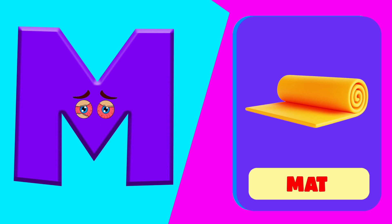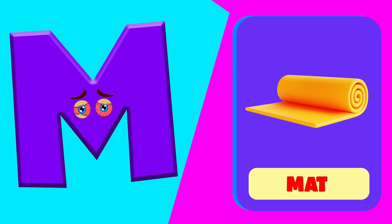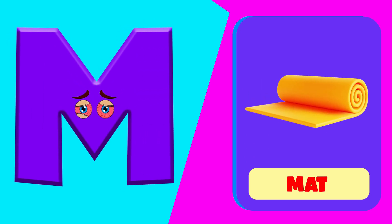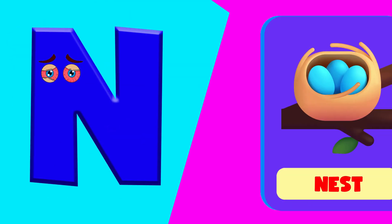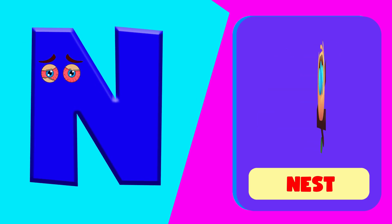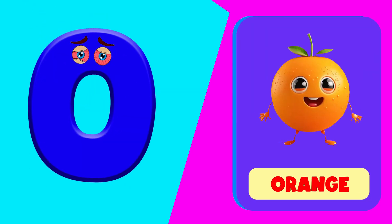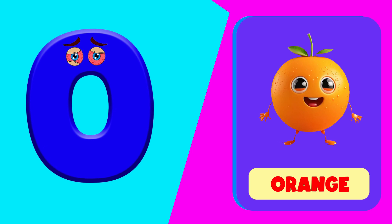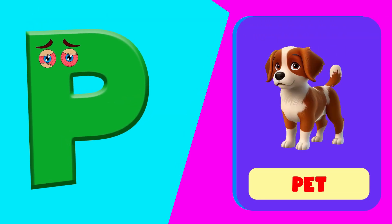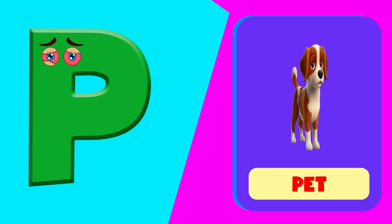M is for mat. m, m, mat. N is for net. n, n, net. O is for orange. o, o, orange. P is for pet. p, p, pet.